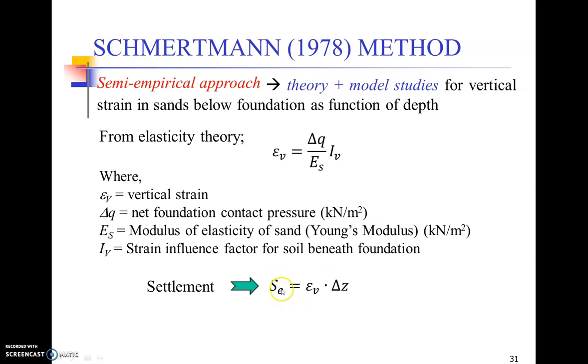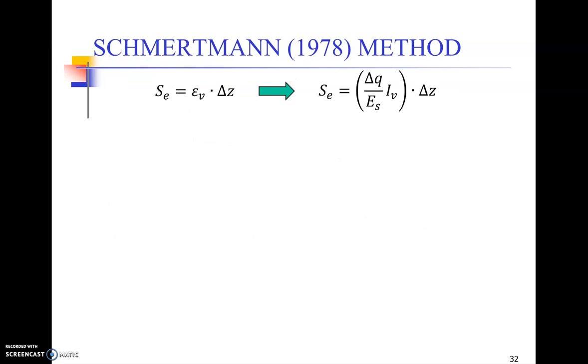The settlement can then be easily measured by simply using this vertical strain due to compression multiplied with the thickness of the soil layer under consideration, given by Δz, and the product will give you Se. So that's the main idea. The expression may be given by Δq over Es multiplied with Iv, and that whole thing is multiplied with Δz.